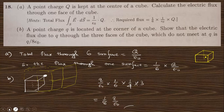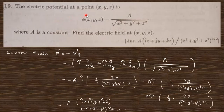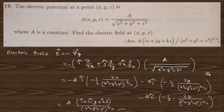Question 20: the electric potential φ is given; find the electric field. Since E = −∇φ, compute the partial derivatives. A is a constant; taking ∂/∂x gives a factor of 2x, ∂/∂y gives y, and ∂/∂z gives z. Taking the common factor gives the final answer for E.